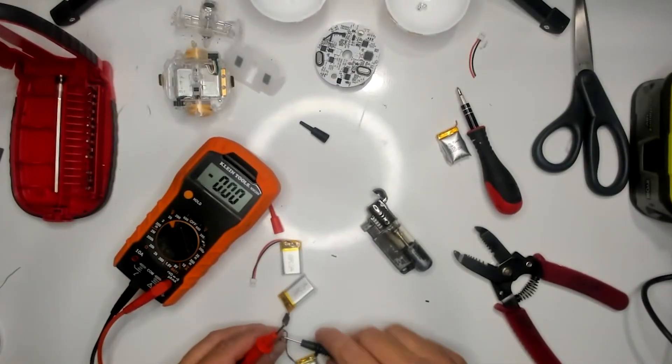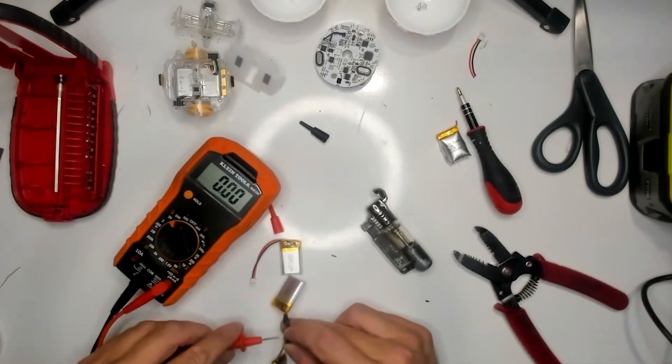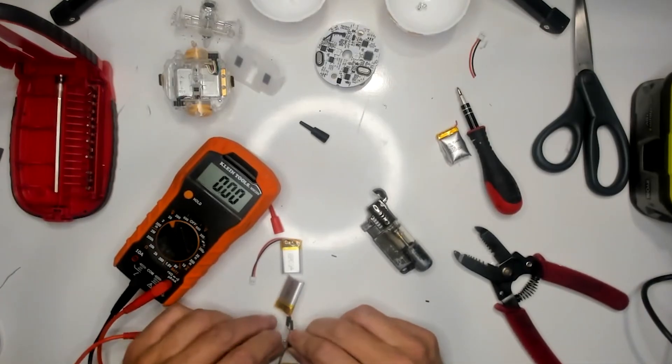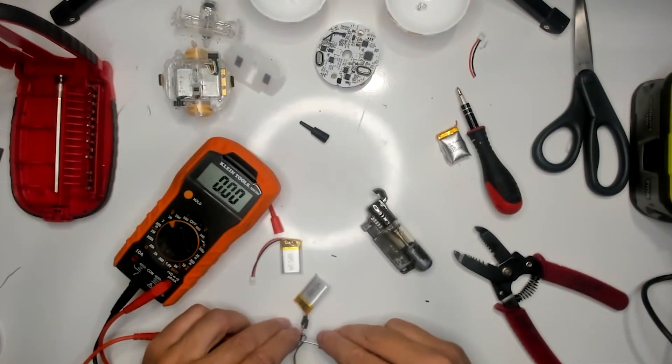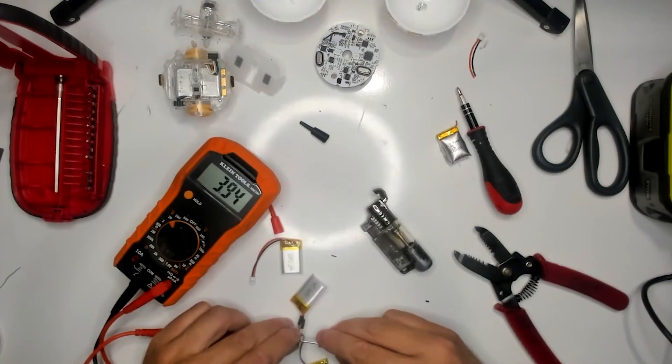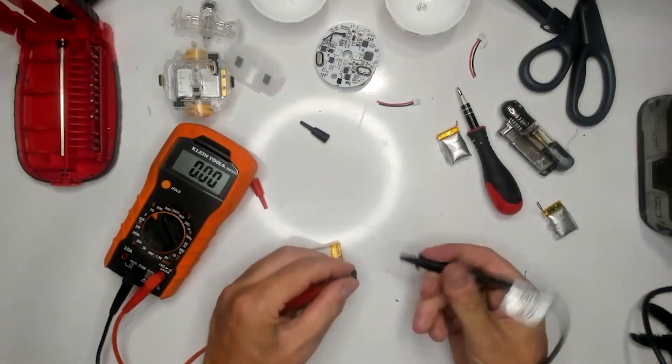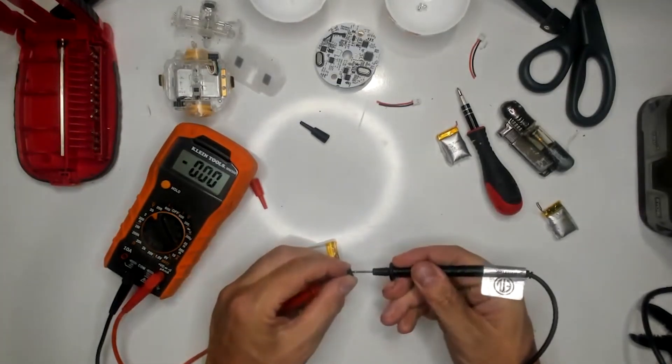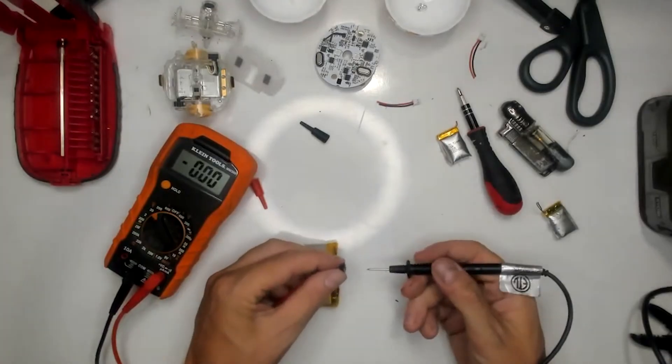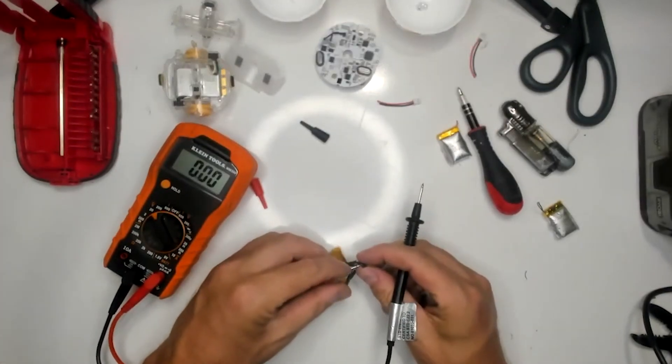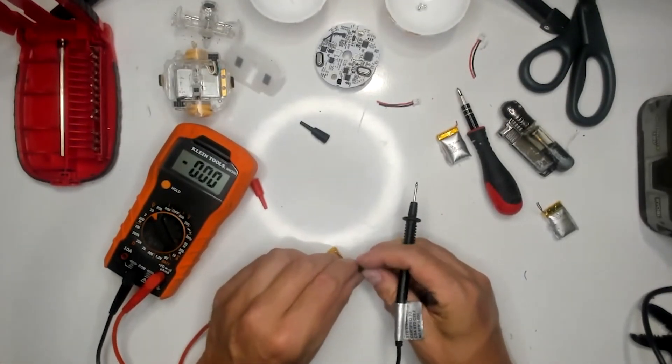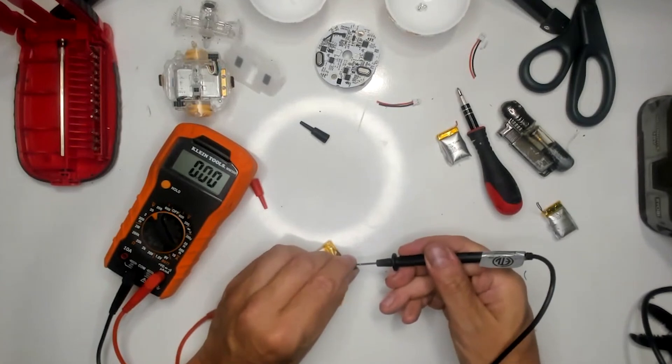I went ahead and tested voltage before I did the other battery and it worked and everything's fine. Repeat the steps for the second battery as well then you can test voltage. If you don't happen to have a multimeter to test the voltage you can either get one off of Amazon or you can actually just plug it into the unit when you're done and test it.